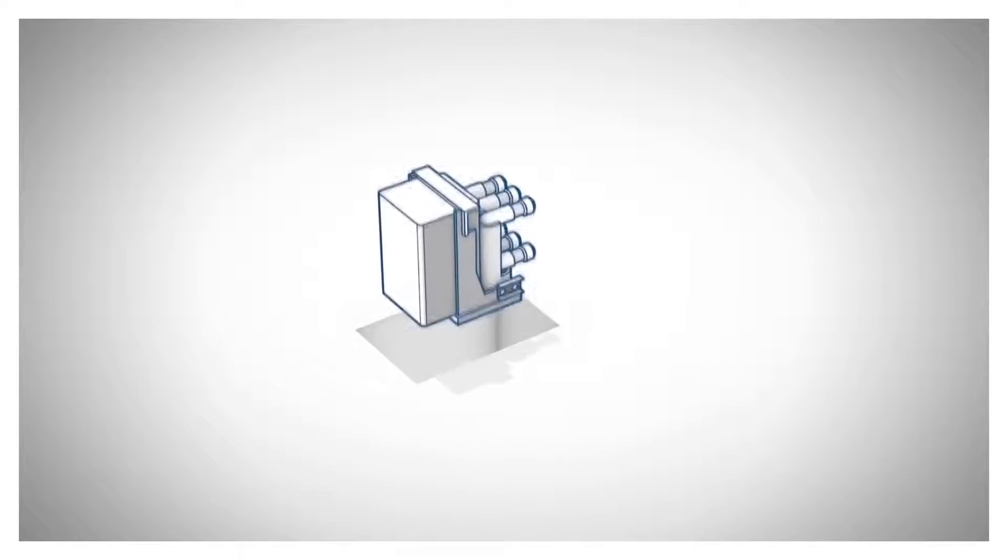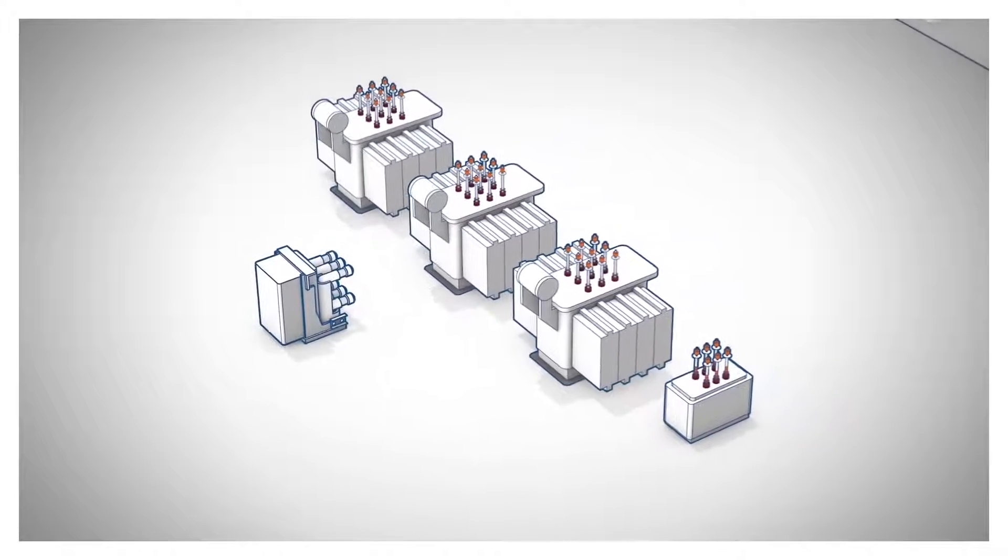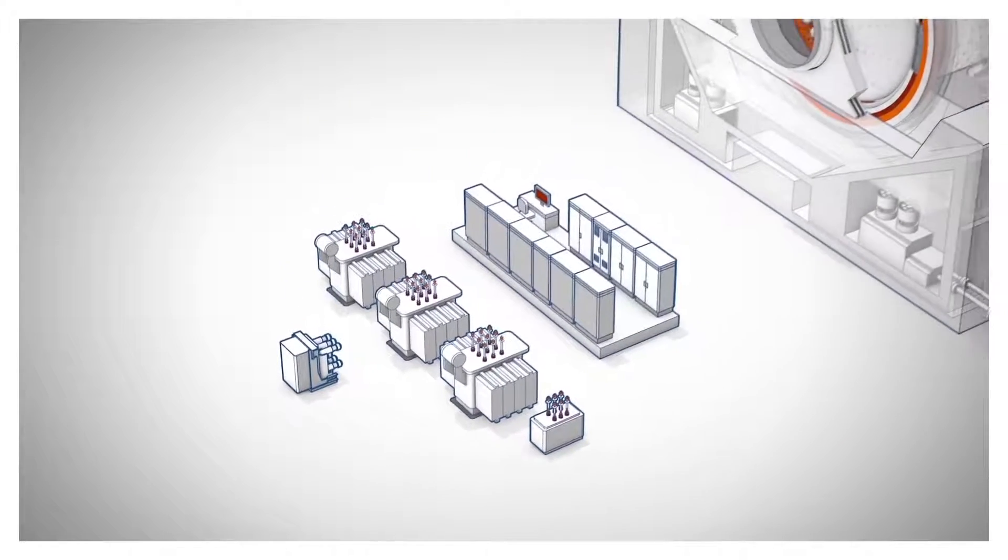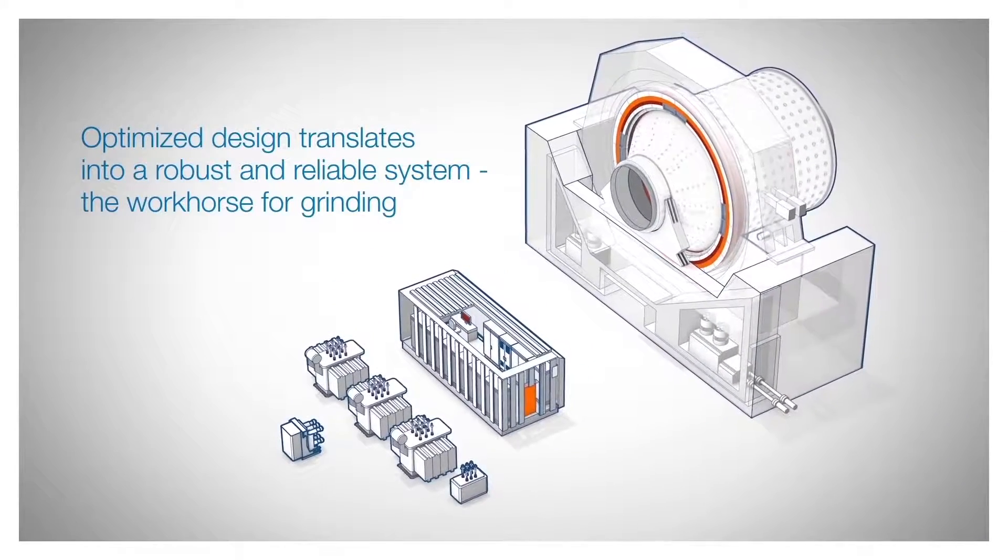The power for ring motors is supplied by transformers and a cyclo-converter. It's placed inside a containerised e-house, together with all the mill auxiliaries' power supplies and controls. The resulting system is known as gearless mill drive, or GMD.